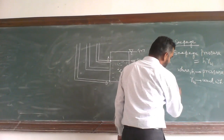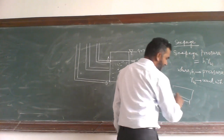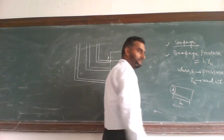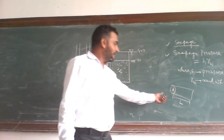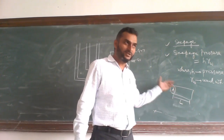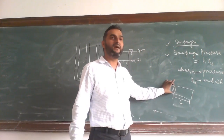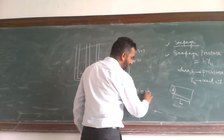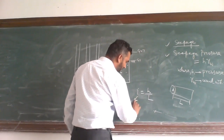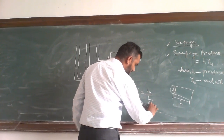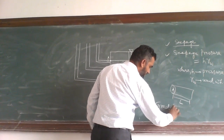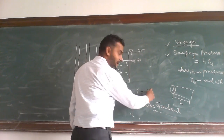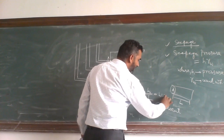Suppose the length of the soil sample is L and the cross-sectional area is A. What will be the hydraulic gradient? If the length of the soil sample is L, the hydraulic gradient is H divided by L. This is called the hydraulic gradient, so H is equal to I into L.